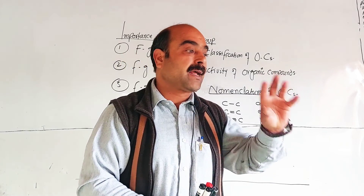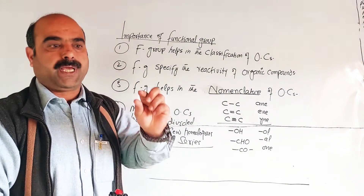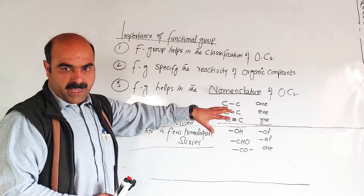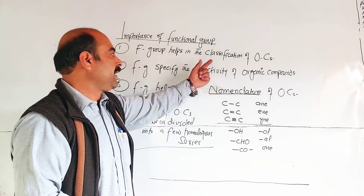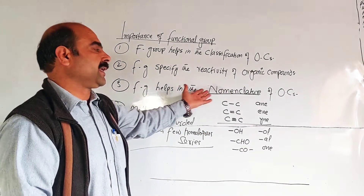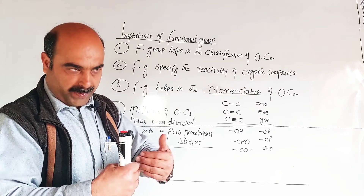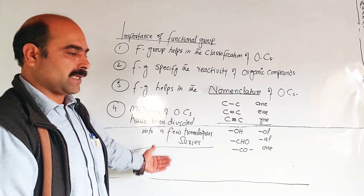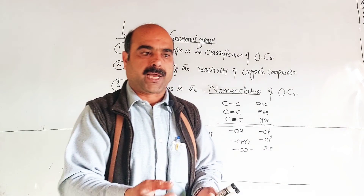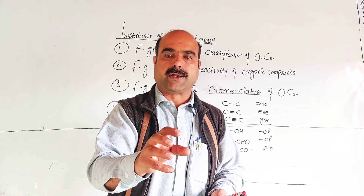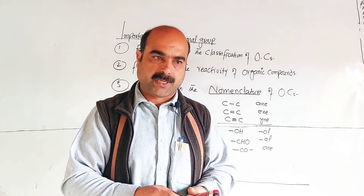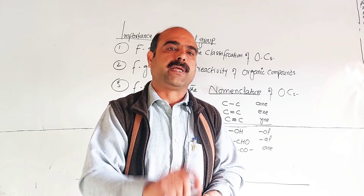To summarize: the functional group is defined as the active reactive part of an organic compound. Its importance includes: it helps in the classification of organic compounds, it helps in specifying the chemical reactivity of organic compounds, and it helps in the nomenclature. Millions of organic compounds are organized into homologous series such as alkanes, alkenes, and alkynes. Different functional groups include aldehyde, ketone, ester, and others which we will discuss in this lecture.